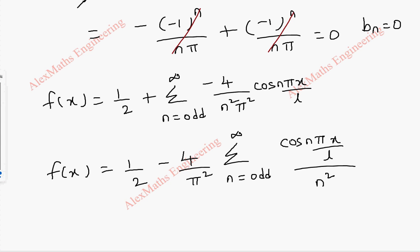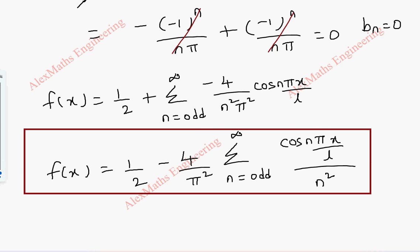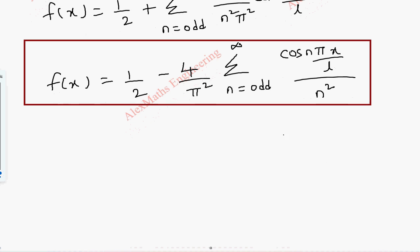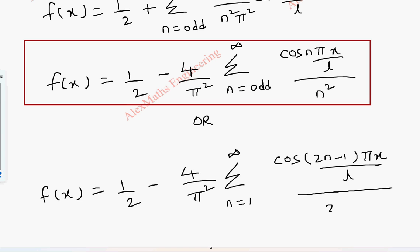This is our final expansion of the given function. We can also rewrite this in another way: f of x equals 1 by 2 minus 4 by π² times summation from n = 1 to infinity of cos((2n−1)πx/L) divided by (2n−1)². Here replacing n by (2n−1) converts the odd-indexed summation into a standard summation from 1 to infinity, which is another equivalent way of expressing the Fourier series expansion.